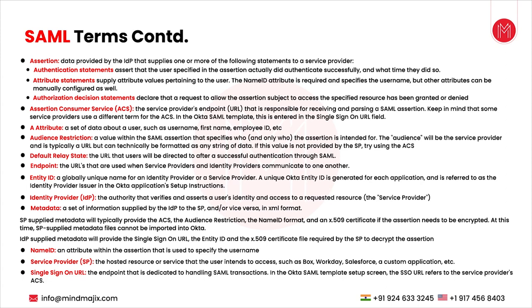The third is the Authorization Decision Statement. This declares whether a request to allow the assertion subject to access a specified resource has been granted or denied. After the assertion is generated, the authorization decision simply says yes or no — if the user is authenticated, allow them; if not, deny access. These three statements — authentication, attribute, and authorization decision — are carried within the assertion, which is the SAML response going back to the service provider.